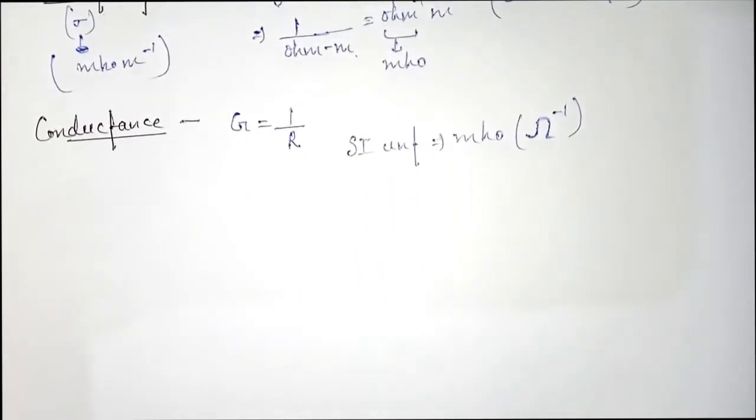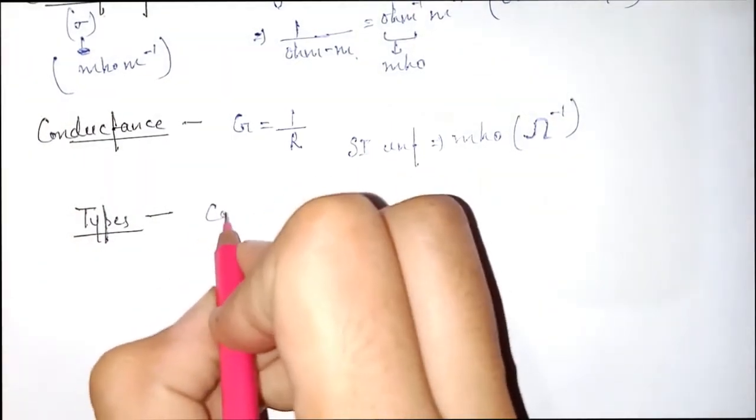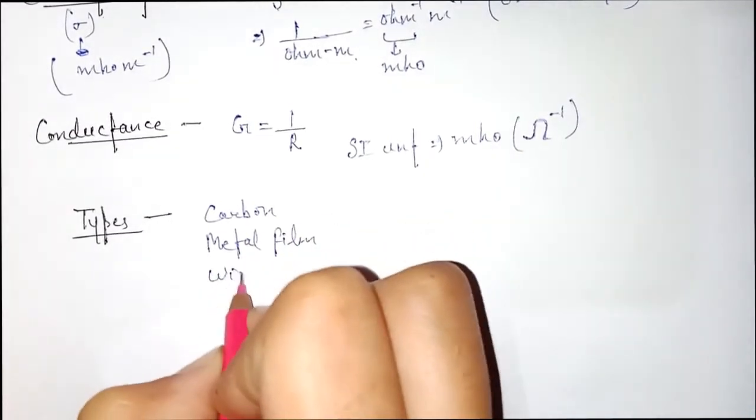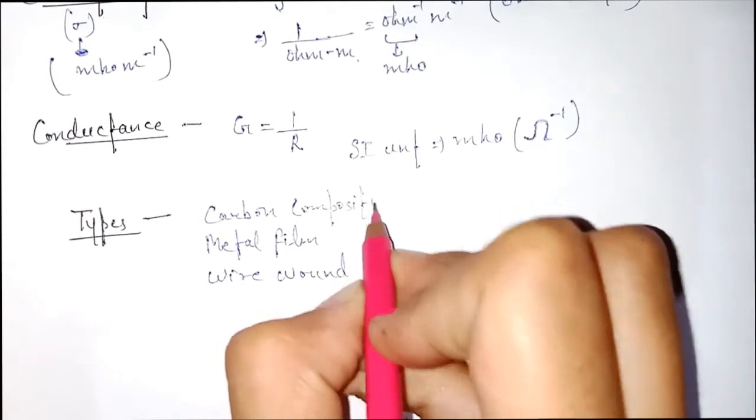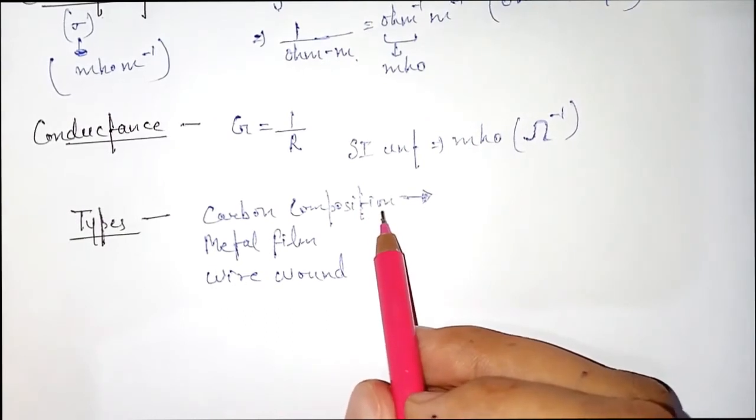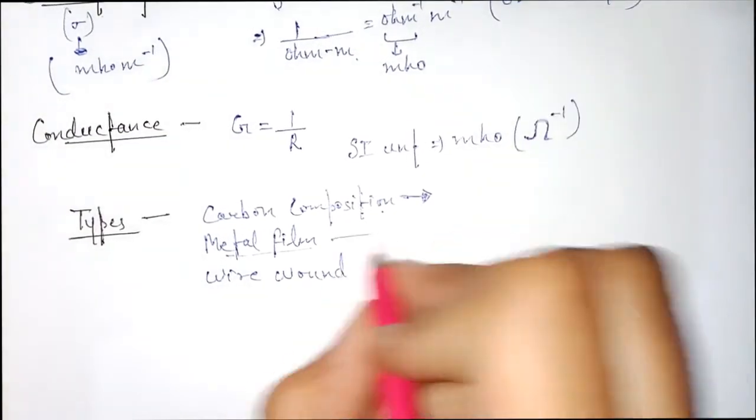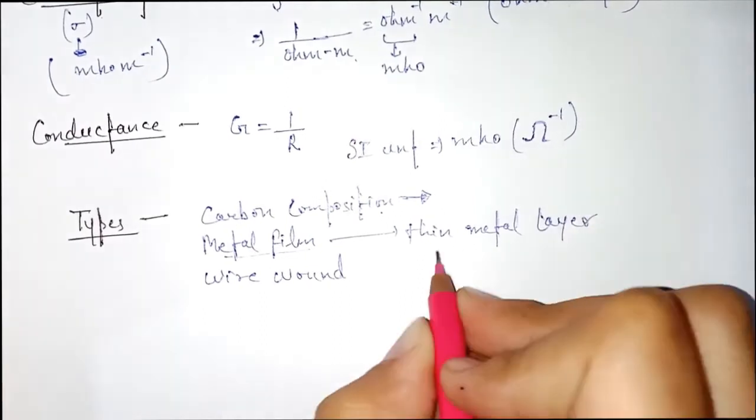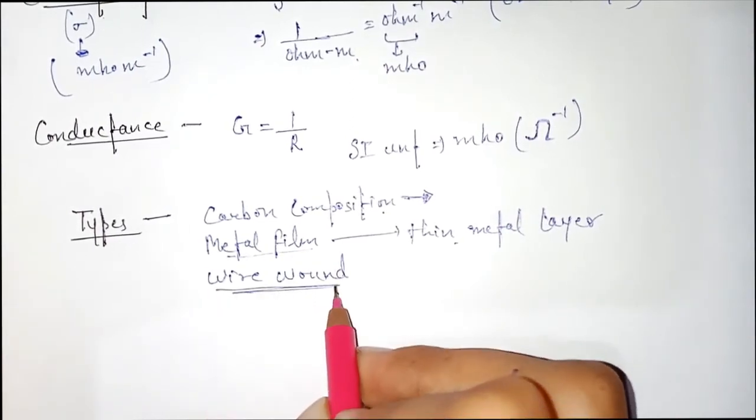These are some basic terms you must be aware of. Now, what are the types of resistors? Resistors are of different types like carbon composition, metal film, or wire wound resistors. In carbon composition resistors, there is color coding present. By seeing the color, you can determine the value of the resistor. In metal film, you have a thin metal layer which acts as a resistive element.